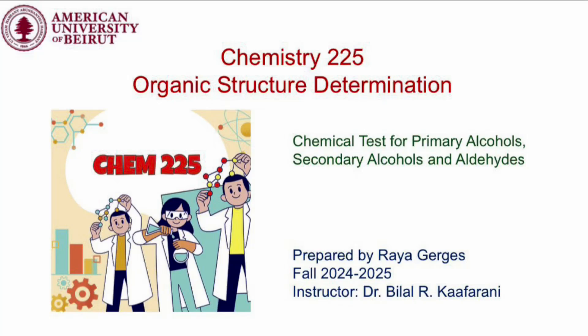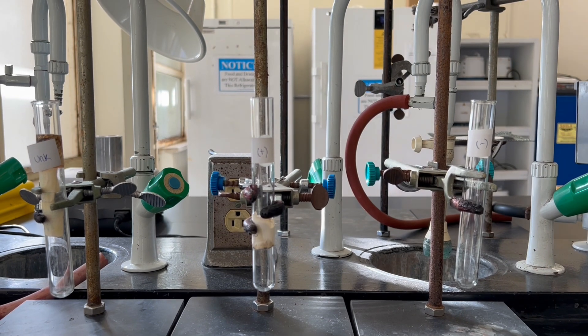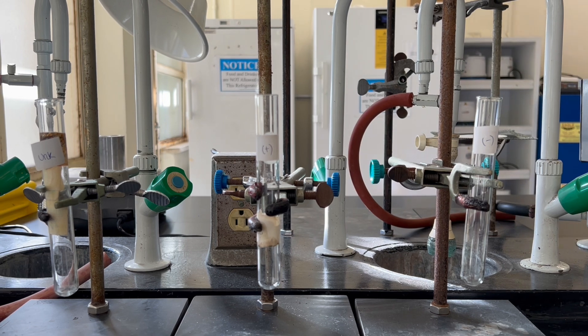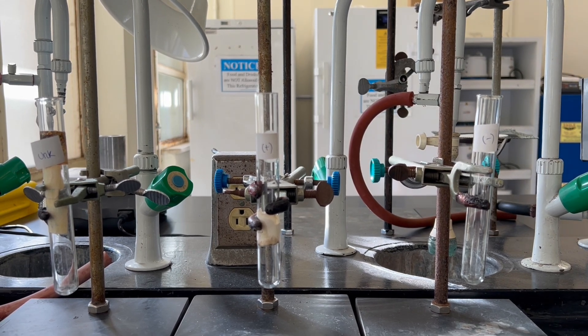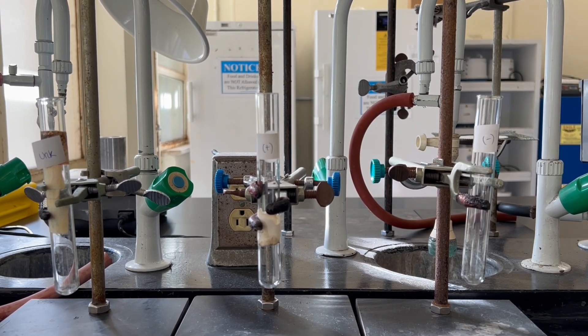Hello, in this video I'll be showing the Jones oxidation test, which is the chemical test for primary alcohols, secondary alcohols, and aldehydes. We have three test tubes: the first one for the unknown, the second one for the positive control, and the last one for the negative control.